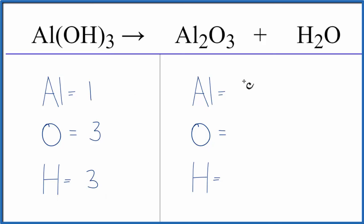On the product side of the equation, we have two aluminums, three oxygens, and be careful because we also have an oxygen out here. So we have a total of four oxygen atoms. And then hydrogen, we have two of those.